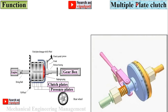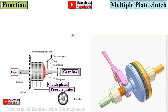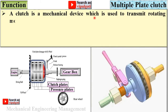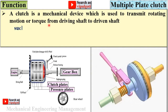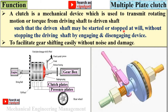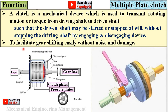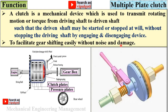The multiple plate clutch uses a number of clutch plates and is located between the engine and the gearbox. A clutch is a mechanical device used to transmit rotating motion or torque from a driving shaft to a driven shaft, such that the driven shaft may be started or stopped without stopping the driving shaft, by engaging and disengaging to facilitate gear shifting easily without noise and damage.